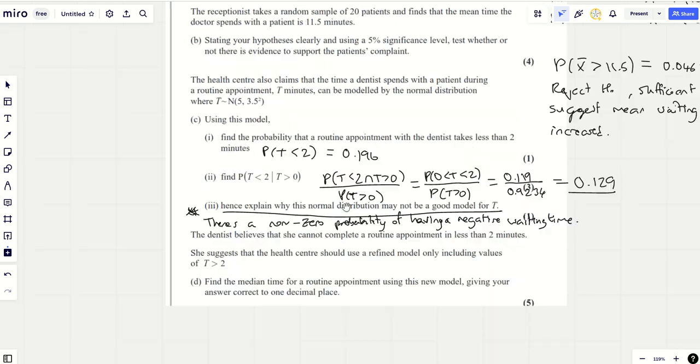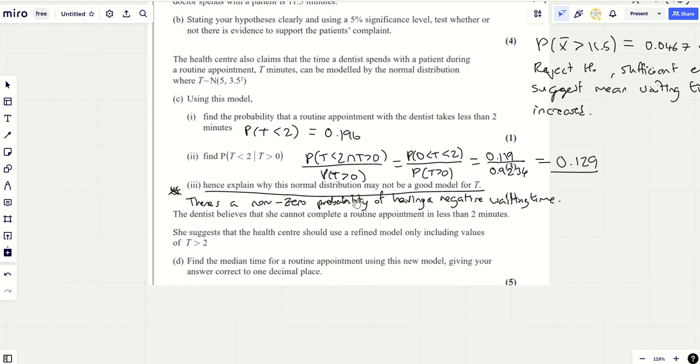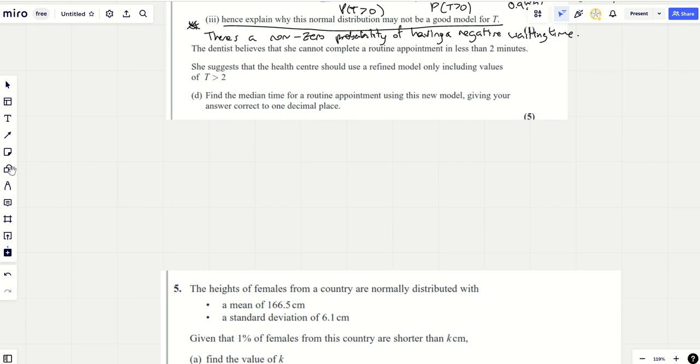The last part of this question. So far, up to this point, I would argue that this question has been pretty nice. But this bit isn't nice. What annoys me about this part - I don't mind them having hard questions - but there's nothing like this in the book. I haven't seen it in the old syllabus either. I haven't seen one like this for years and years. The dentist believes that she cannot complete a routine appointment in less than two minutes. So she suggests that the health centre should use a refined model, only including values of T greater than two. Find the median time under the new refined model. Once you've learned how to do this, it's actually not that difficult.